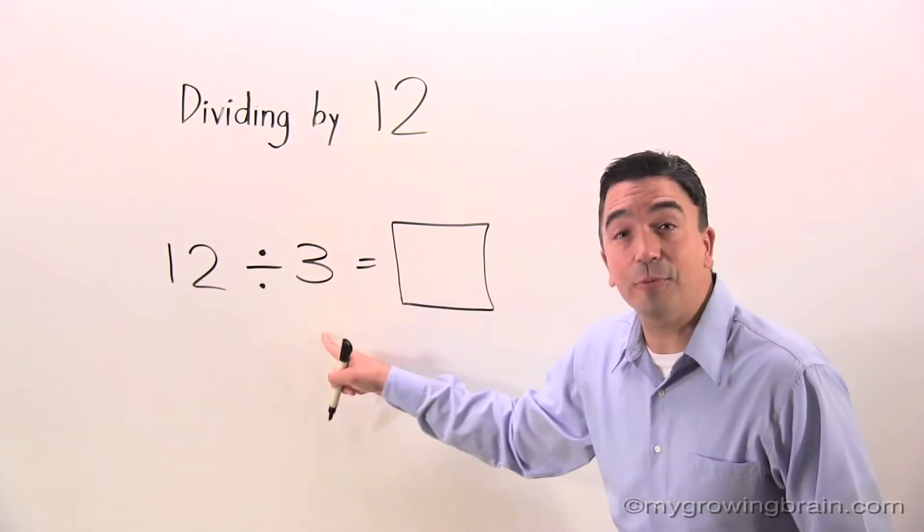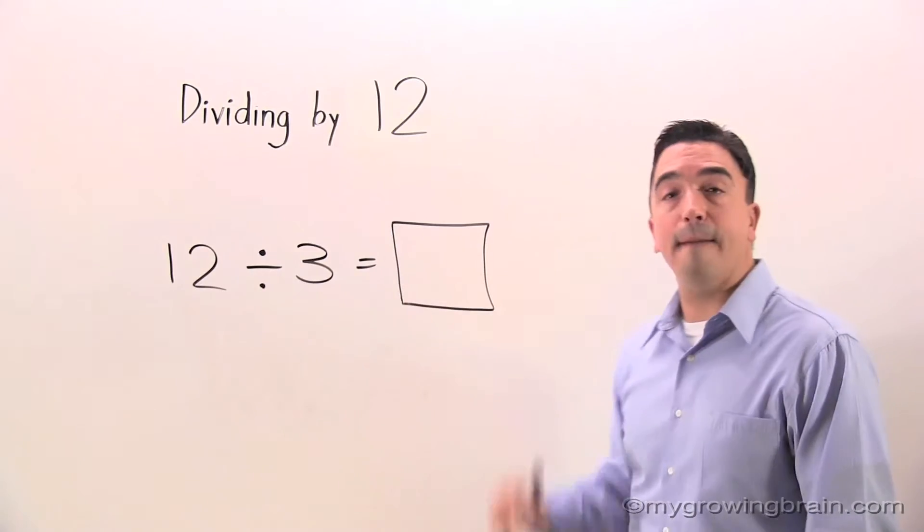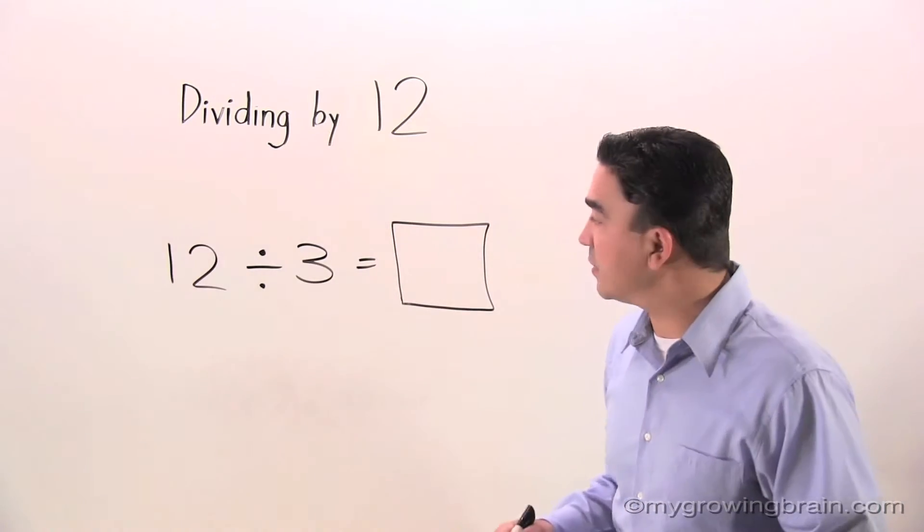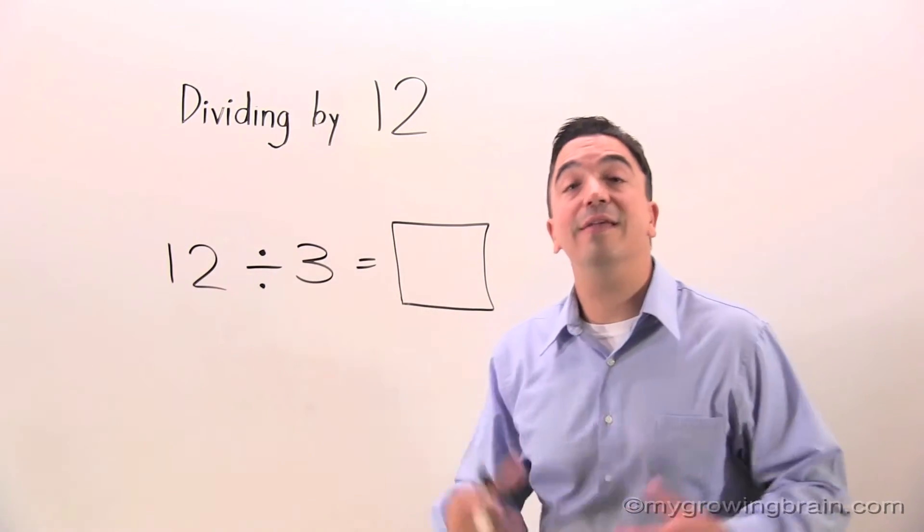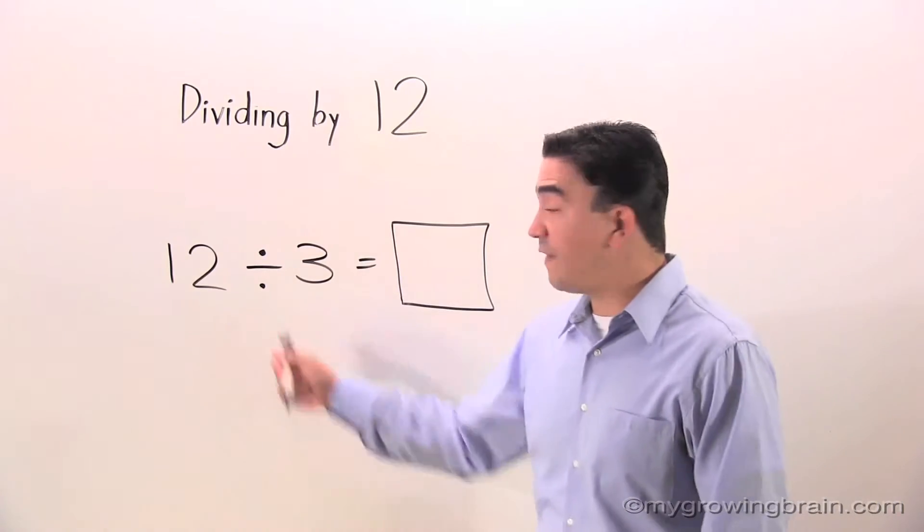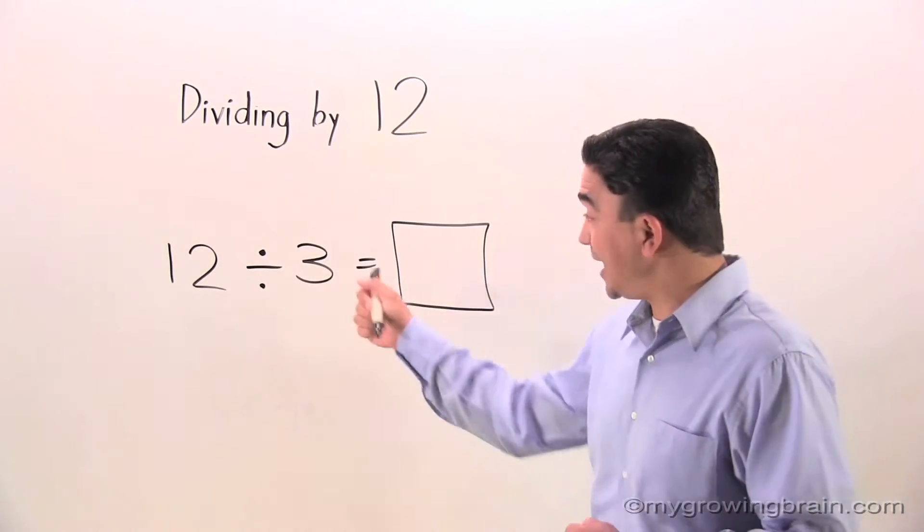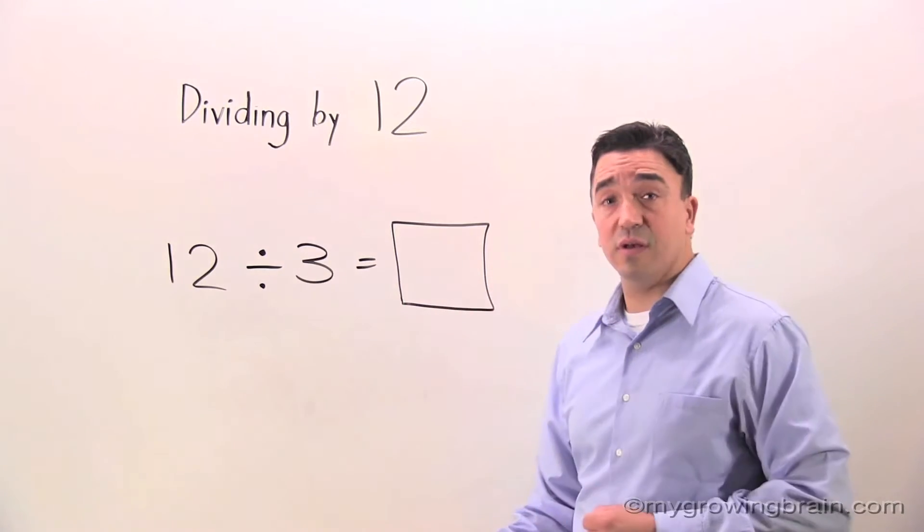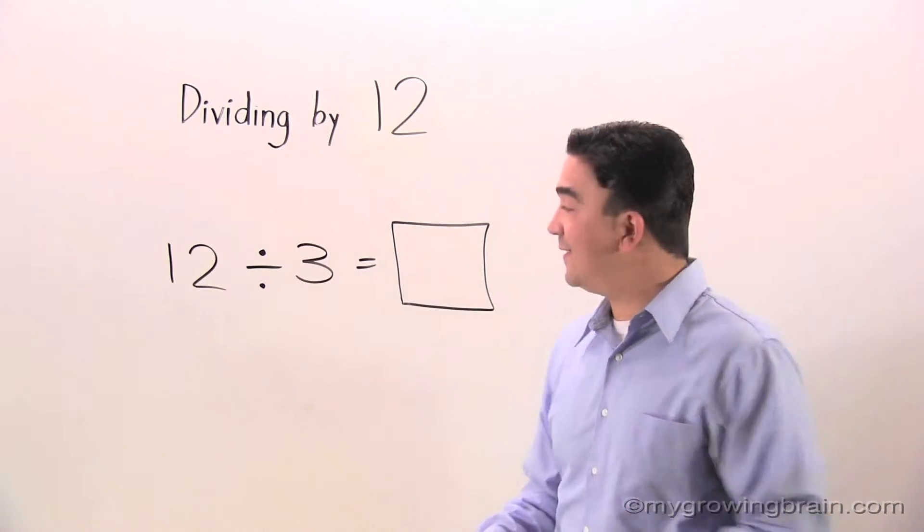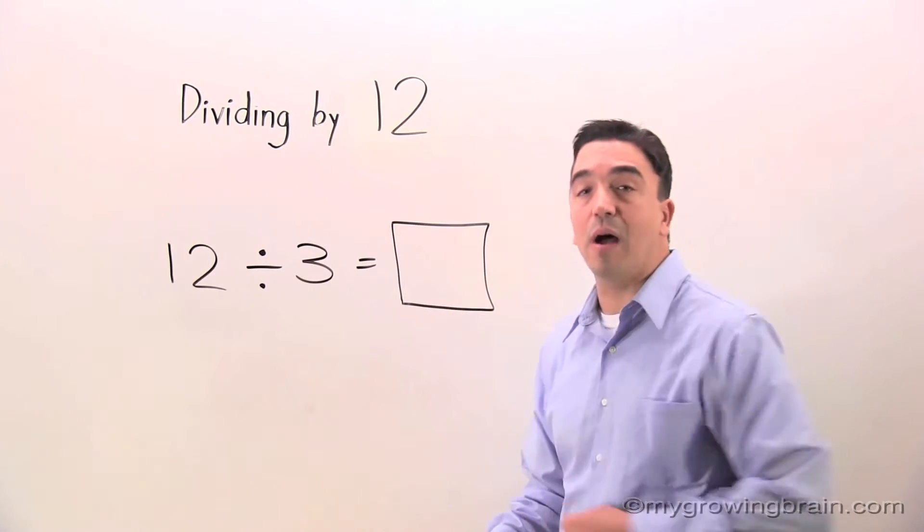12 divided by 3 equals blank. Let's talk about this. 12 is the dividend, and it's divided by 3, which is the divisor, which equals box, which is the quotient. The quotient is the answer to a division problem.